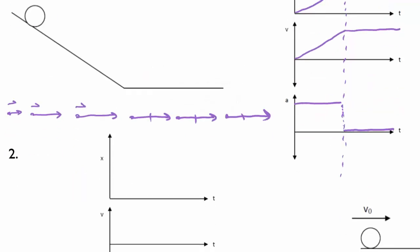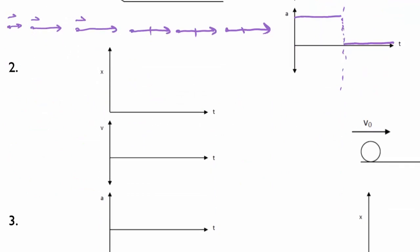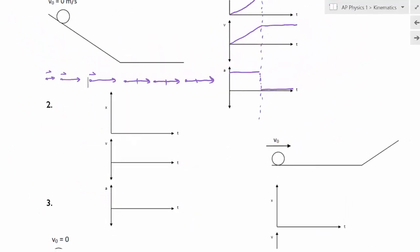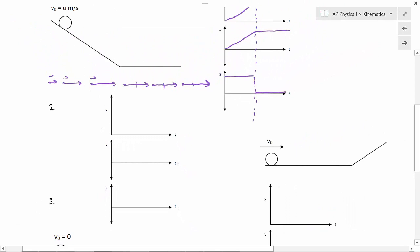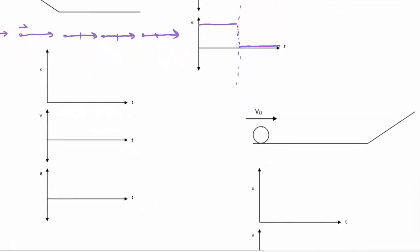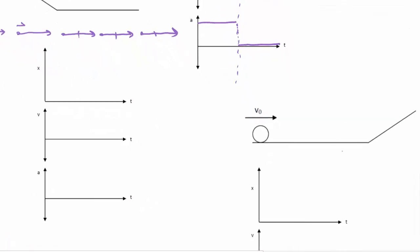Let's do number two. Number two, we have a ball actually sliding up a ramp now. This little V sub zero means it starts with some velocity. It's moving. Because it's moving and it's moving rather quickly, I'm going to start my position time graph as starting out steep. And because it's moving at a constant speed, it hasn't started going up the ramp yet, I'm going to draw a straight line for my position time graph.